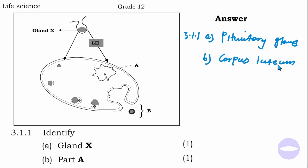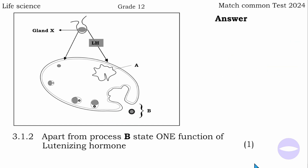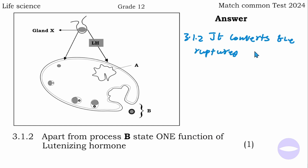The next question says: apart from the process B, state one function of the luteinizing hormone. Process B is ovulation, which is caused by luteinizing hormone. But another function of LH is to convert the ruptured follicle into corpus luteum. So the answer is: it converts the ruptured follicle into corpus luteum.